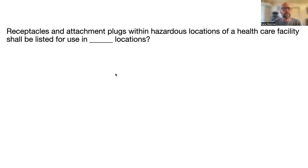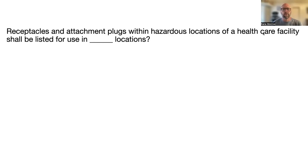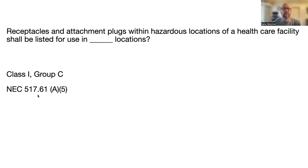Next question: receptacles and attachment plugs within a hazardous location of a health care facility shall be listed for use in blank locations. Health care facilities are covered in Article 517. Go to the keyword index, find 'health care facilities,' look for receptacle listings in hazardous locations, and the answer is Class I, Group C. That's found at NEC 517.61(A)(5) — highlight that.